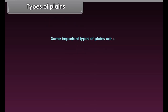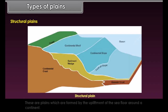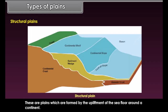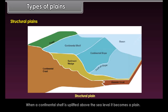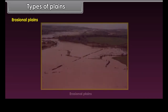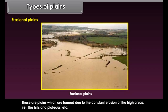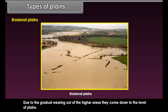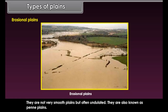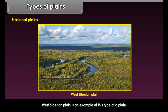Some important types of plains are structural plains, erosional plains, and depositional plains. Structural plains are formed by the upliftment of the sea floor around a continent; when a continental shelf is uplifted above sea level, it becomes a plain. Erosional plains are formed due to constant erosion of high areas such as hills and plateaus. Due to gradual wearing out of higher areas, they come down to the level of plains and are often undulated, also known as peneplains. The West Siberian Plain is an example.